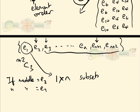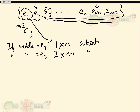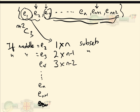If the middle element is e3, there are 2 choices before it and n−1 choices after, giving 2×(n−1) subsets. If the middle element is e4, there are 3 choices before and n−2 after, giving 3×(n−2) subsets. Continuing, for middle element e(n), there are n−1 choices before it and 2 choices after (e(n+1) and e(n+2)).